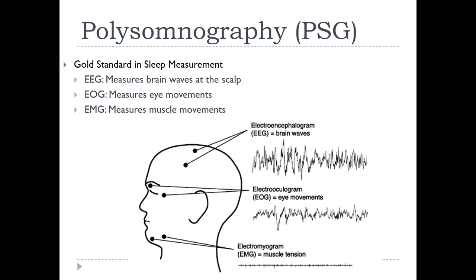We also take heart rate, breathing, and many other measurements during PSG. But the three main ones that tell us what stage and type of sleep we're in are the brain waves — which tell us what kind of waves our neurons are emitting — eye movements, which tell us if we're in REM because the eyes are moving back and forth, and EMG for muscle movement, because REM is characterized by a lack of muscle tone. You go pretty much completely paralyzed.